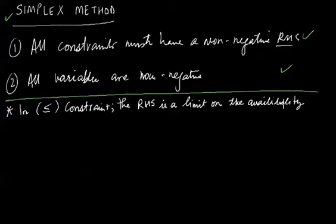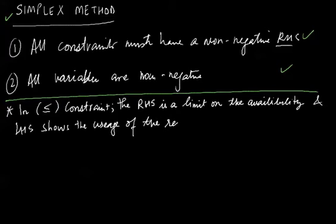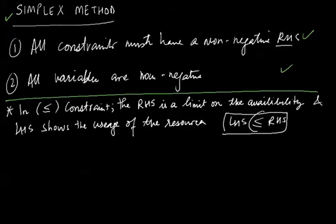As we studied this in the formulation of an LP, the right-hand side basically is a restriction to the amount of resources you can use, and the LHS shows the usage of the resources and how much are using. This means LHS should always be less than or equal to RHS. This means your usage should always be less than or equal to the availability of the resources.